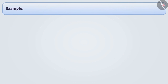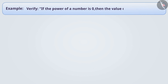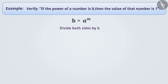Next example: verify the statement — if the power of a number is 0, then the value of that number is 1. Let's verify it. Suppose b equals a to the power of m. Let's divide both sides by b, so b divided by b equals a to the power of m divided by b.